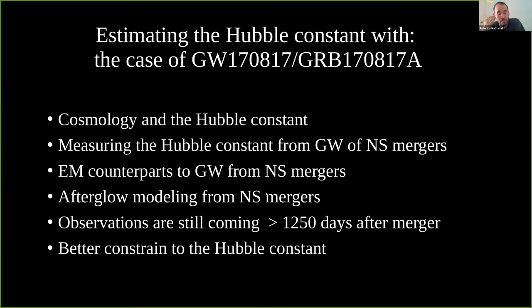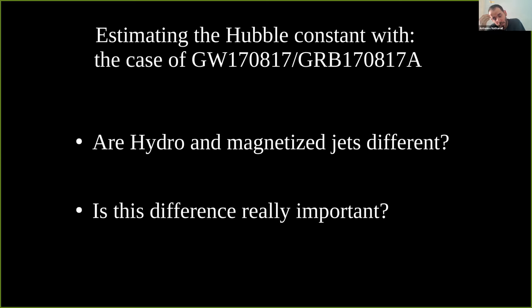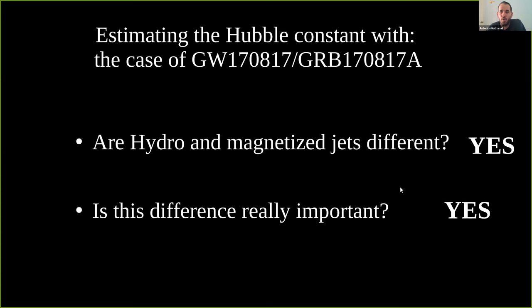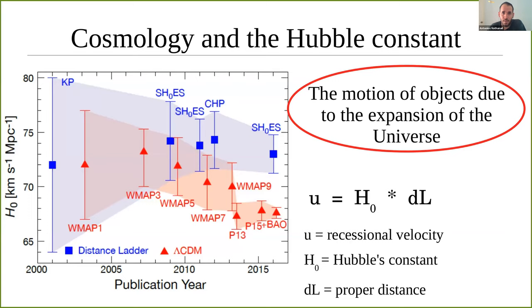I will discuss modeling the afterglow from neutron star mergers, briefly cover a new observation from a few months ago, and then combine the gravitational wave Hubble constant estimation with electromagnetic counterpart afterglow modeling for a better constraint. I want to raise two questions: are hydro and magnetized jets really different, and is this difference really important? In both cases, the answer is yes, and this leads to a better estimation of the Hubble constant.